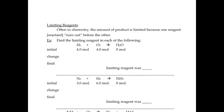Today we're on page 4 of the Chapter 12 Chemistry 1 packet, and we're going to be talking about limiting reagents. Often in chemistry, the amount of product is limited because one reagent, which means reactant, runs out before the other.